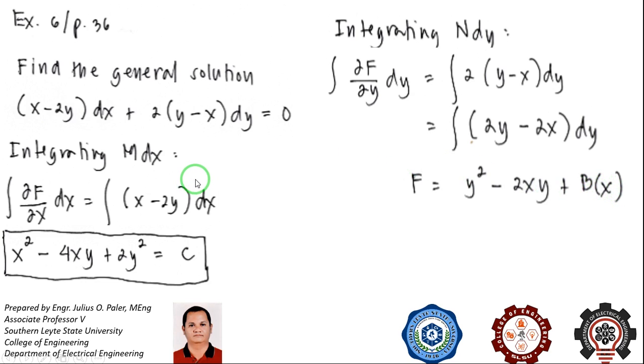Let us now use the representation of our integration constant B of X. Previously we used A of Y in the first solution. Now this is already F, because we have integrated the partial derivative with respect to Y. So if you look, our F, which is already our solution, has the missing B of X term.